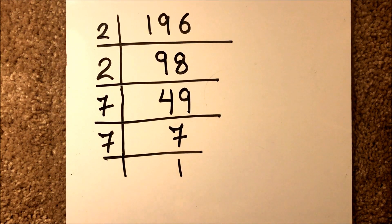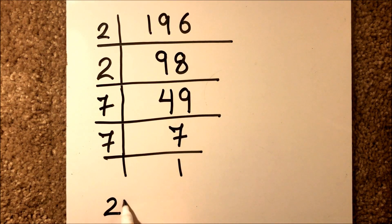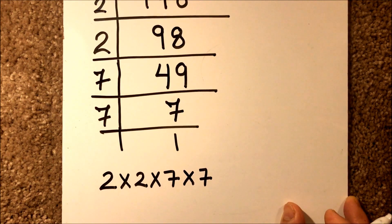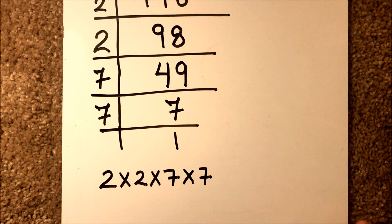So to find the square root, we will write the numbers on the left-hand side like this: 2 times 2 times 7 times 7. And what we will do is we will take the pair of numbers.